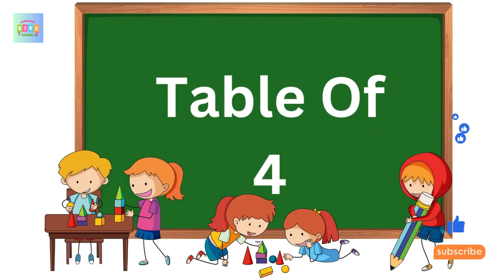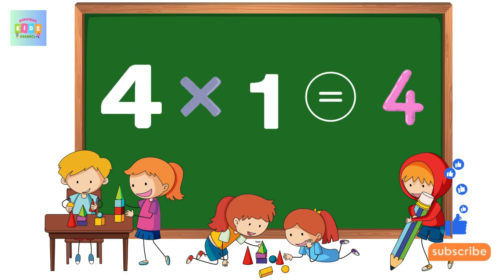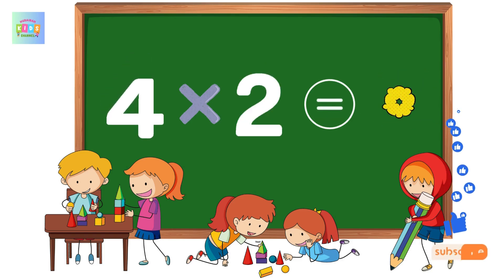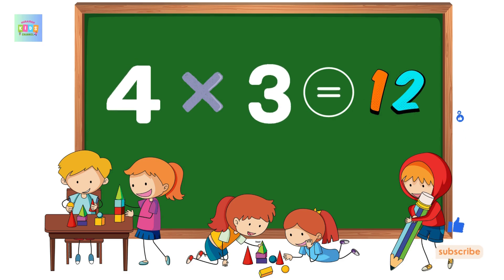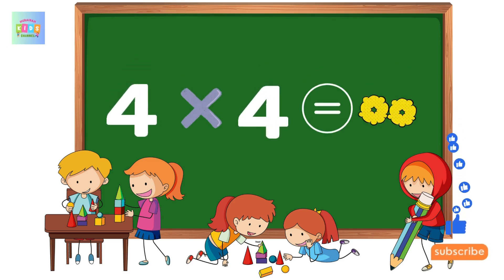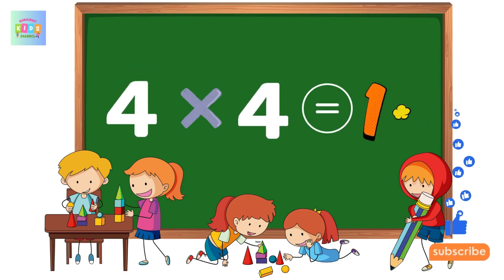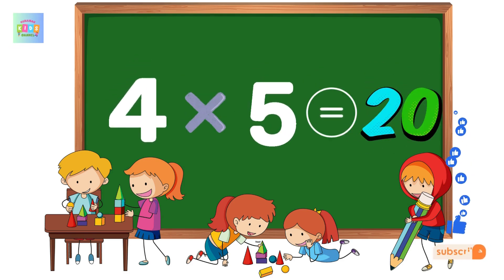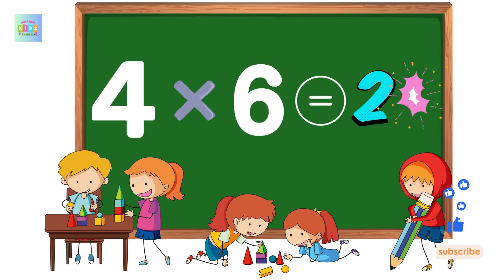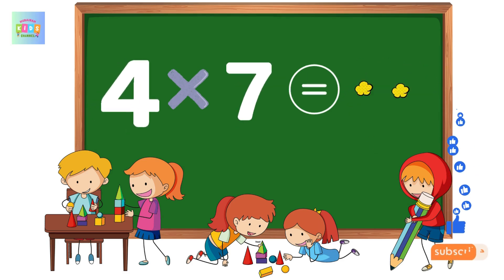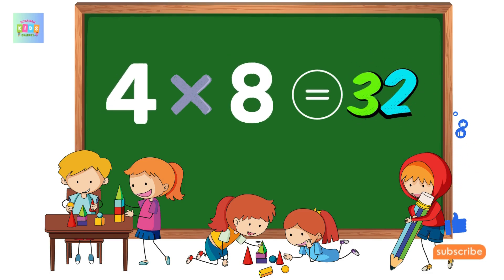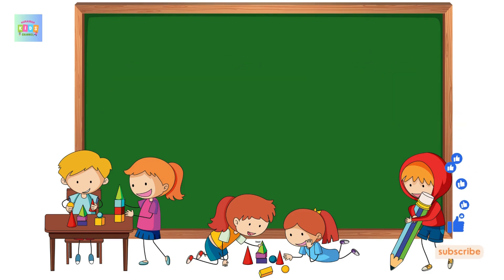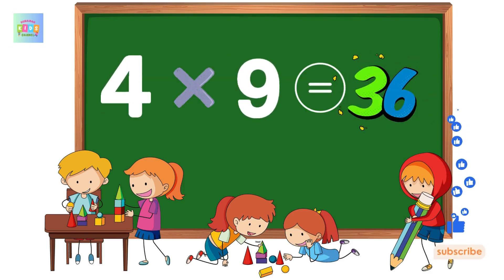Table of 4. 4 1 is 4, 4 2 is 8, 4 3 is 12, 4 4 is 16, 4 5 is 20, 4 6 is 24, 4 7 is 28, 4 8 is 32, 4 9 is 36.